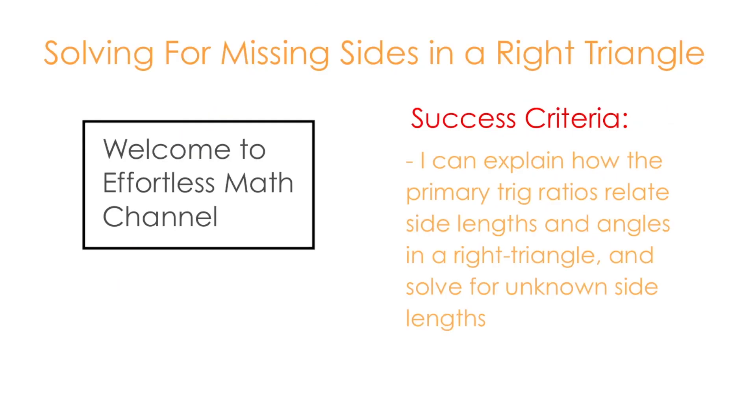So just to recap, what we did in this video is looked at how to apply the primary trig ratios to solve for missing sides in a right triangle. We took a quick look at the Pythagorean theorem, and we compared how the primary trig ratios relate side lengths to angles, which allow us to solve problems where angles are given. I hope this video helps. Thanks for watching Effortless Math Channel.